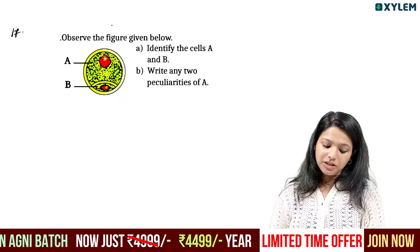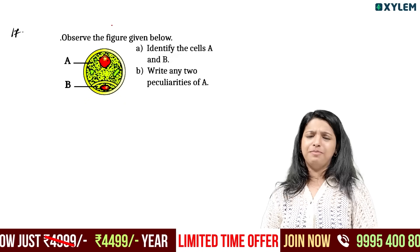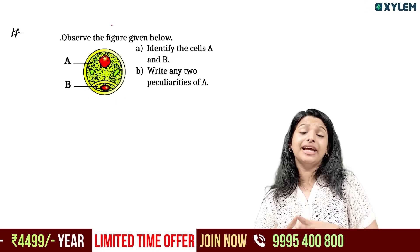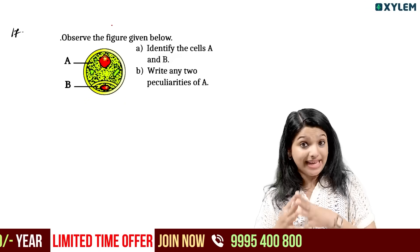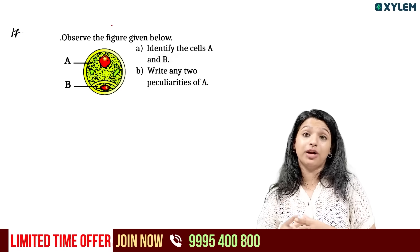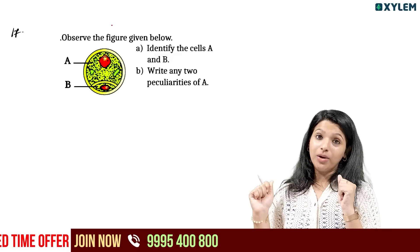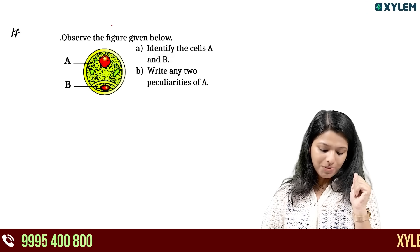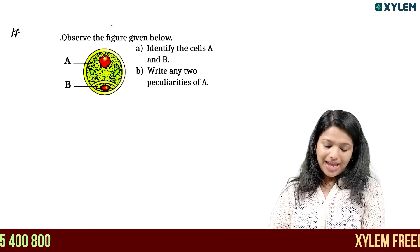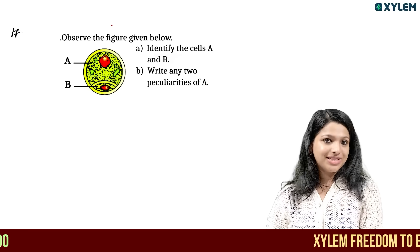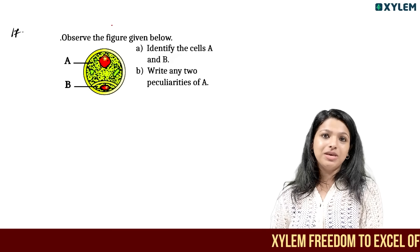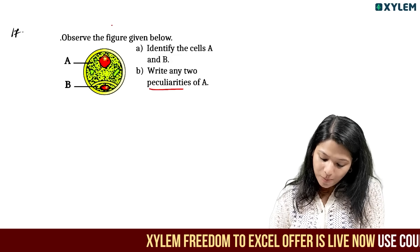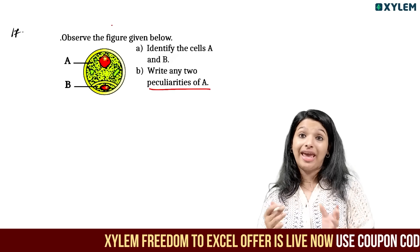Identify cells A and B in the diagram. In this chapter we will identify important diagrams. A refers to the vegetative cell and B refers to the generative cell. Write two peculiarities of A.